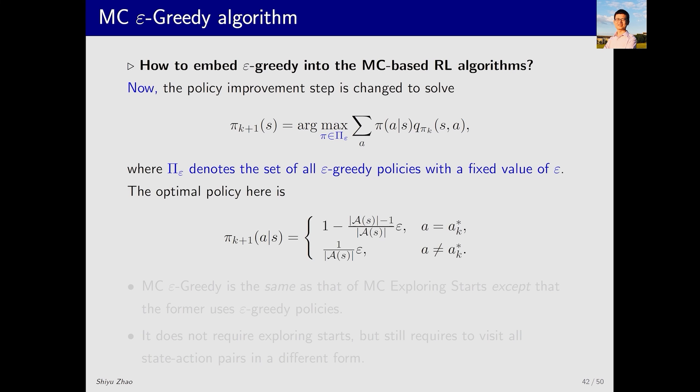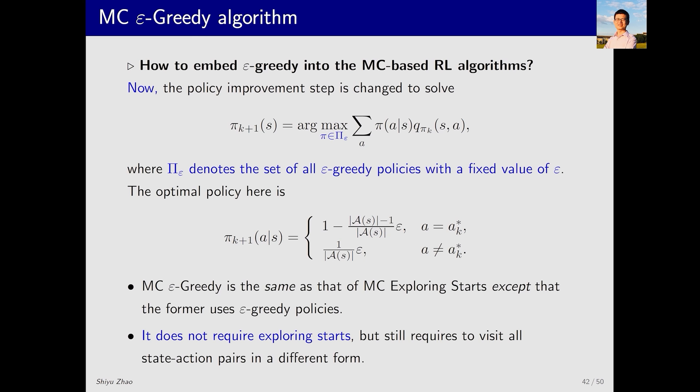The resulting optimal policy here assigns the highest probability to the greedy action, while assigning the same smaller probability to all other actions. This essentially gives us the MC epsilon greedy algorithm. This algorithm is the same as that of MC exploring starts, except that in MC exploring starts we use the greedy policy, whereas here we use the epsilon greedy policy.